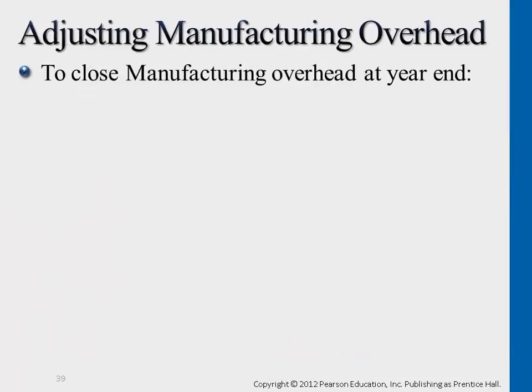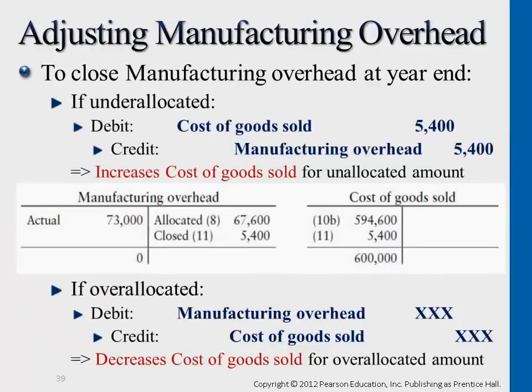So how do we do this? This is what the entry looks like. If it's under-allocated, that means we assigned too few costs, so we want to increase the cost of goods sold expense account. We debit cost of goods sold, and because of under-allocation, the credit side is too low — we credit an additional $5,400 altogether. So basically, we're closing out the manufacturing overhead account.